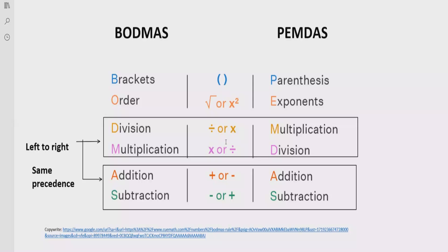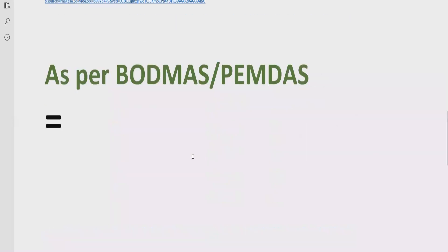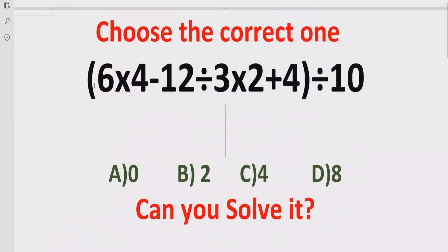Both division and multiplication have similar precedence, so you can solve whichever comes first going left to right. Similarly, for addition and subtraction we have the same rule — solve whichever operation comes first. Now let's move forward to solve the given expression.